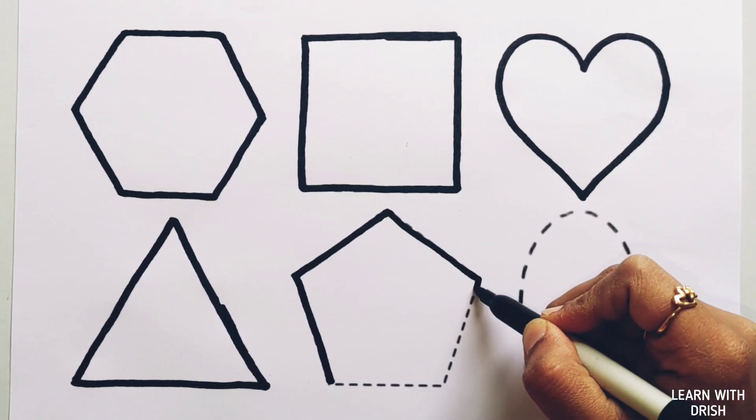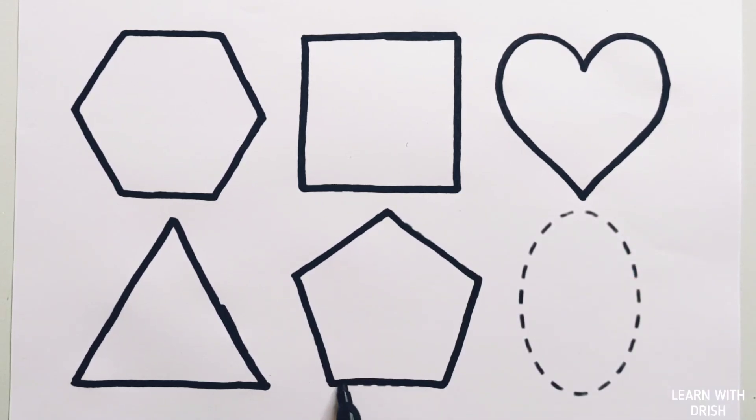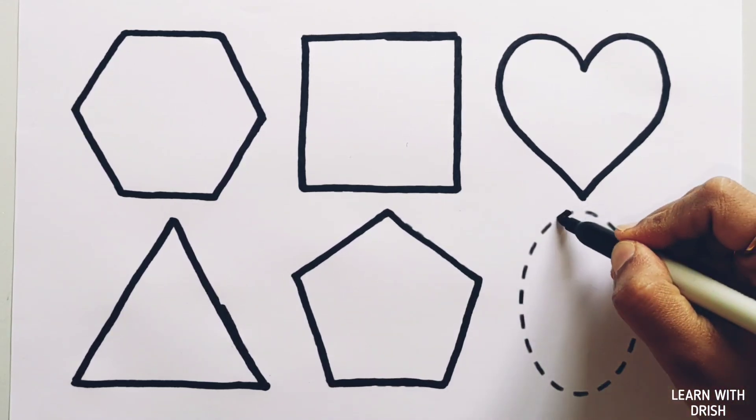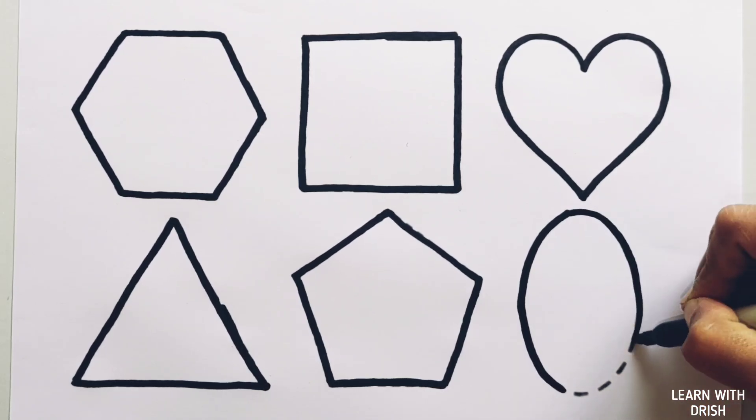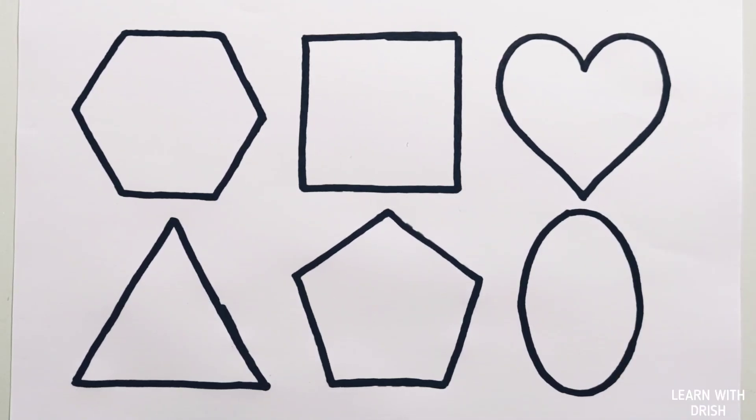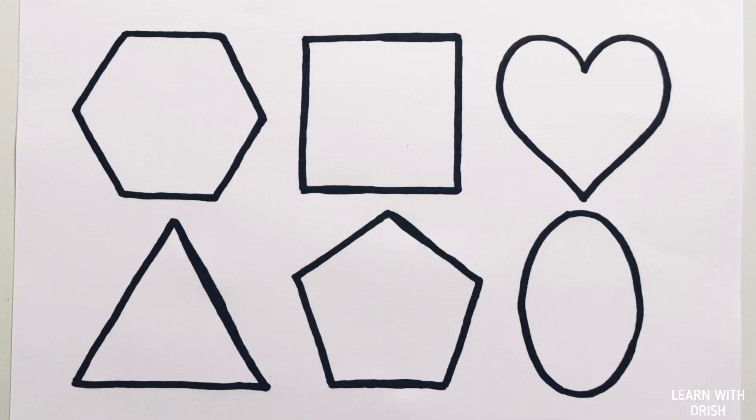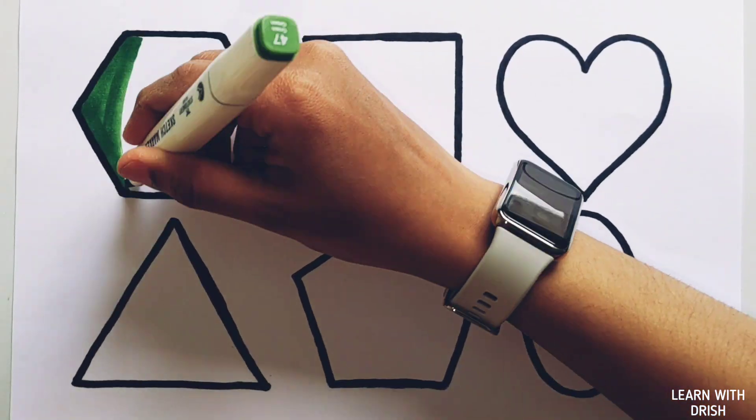Pentagon. Pentagon has five sides. Oval. An oval is an egg shape. Now let's color dark green color.